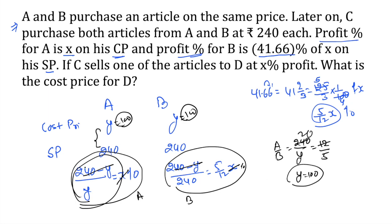Now we need to find the cost price for D. Since we have 100 rupees as the cost price and selling price is 240, the profit is 140. This is a percentage only if we have 100 rupees as the cost price, so this is the value of x. If C sells one of the articles to D at x percent profit, the cost price of C was 240. We need to find the selling price of C, which is the cost price of D. If we solve, we are getting 576. The answer is 576.